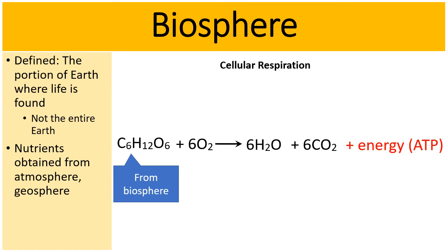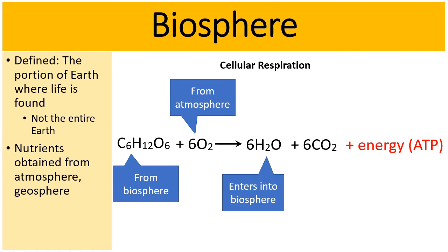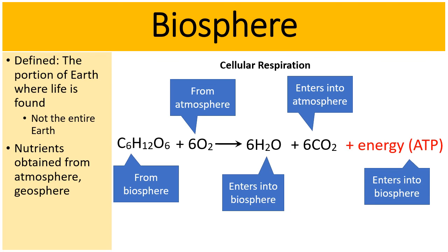An autotrophic plant probably made that molecule of glucose. And so now look at the next part, the 6-O2s, the oxygen, that came from the atmosphere. And then through the process of cellular respiration, notice six molecules of water are created. Well, that water enters into the biosphere. The carbon dioxide, that enters into the atmosphere. We exhale carbon dioxide waste into the sky. And then the energy that's created during cellular respiration, that enters into the biosphere.